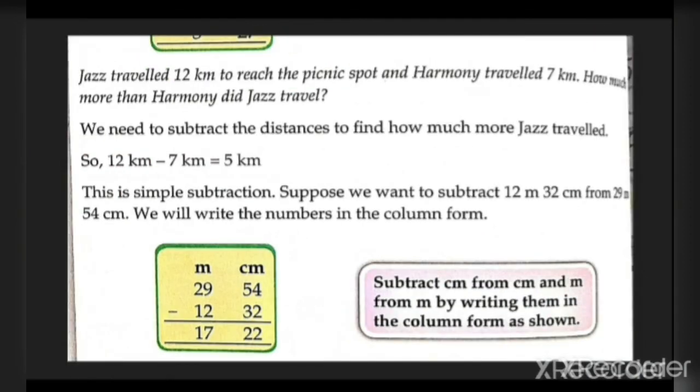Jazz travelled 12 km to reach the picnic spot and Harmony travelled 7 km. How much more than Harmony did Jazz travel? We need to subtract the distances to find how much more Jazz travelled. So, 12 km minus 7 km equals 5 km.